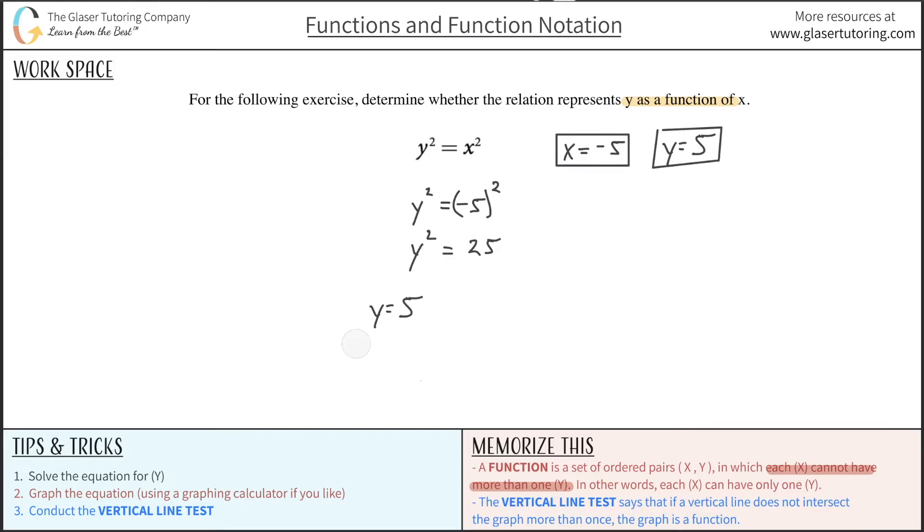But you might have also said, well, wait a minute, couldn't y in here also have been negative 5? Because negative 5 squared is equal to 25. And you're right. So y also could have been equal to negative 5.